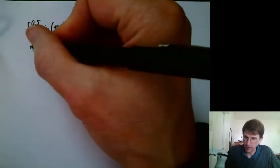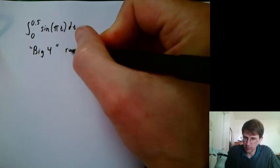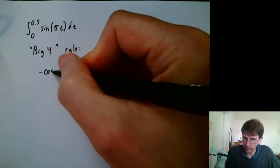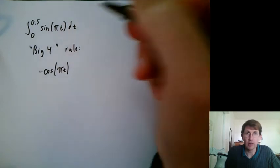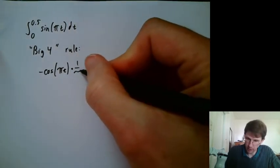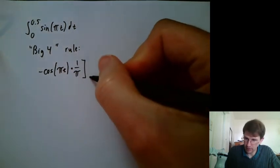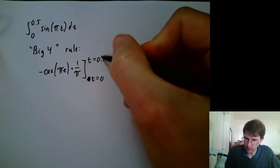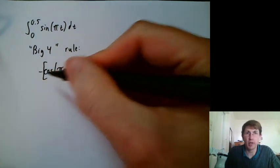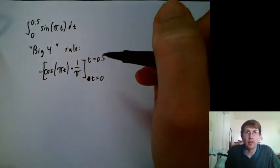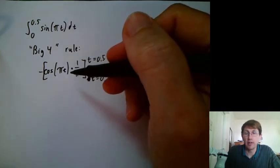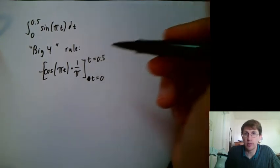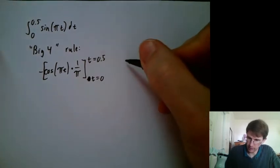We could also say, let's use a big 4 shortcut, and say that the integral of sine is negative cosine. Copy the linear part, the π t, multiply by 1 over whatever slope is hitting the t, and then we'll emphasize that this is still t equals 0, t equals 0.5. You can put the bracket outside the minus or inside the minus, it doesn't matter. And so I managed to do the antiderivative using a big 4 rule, and not even have to think about u substitution, not think about whether I wanted my start and stop points to be translated from u values to t values or not.